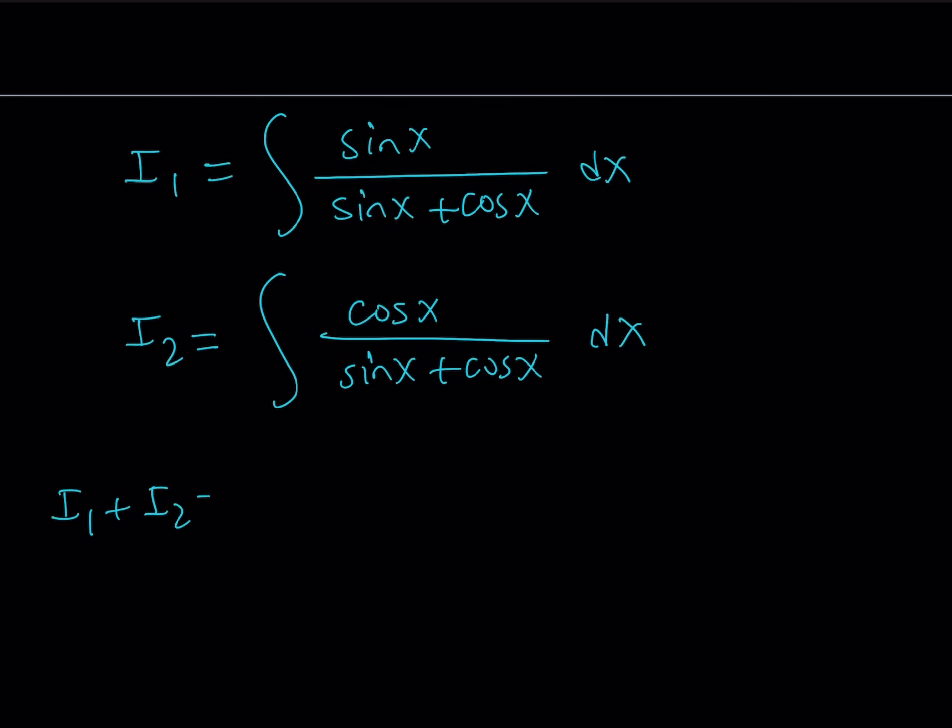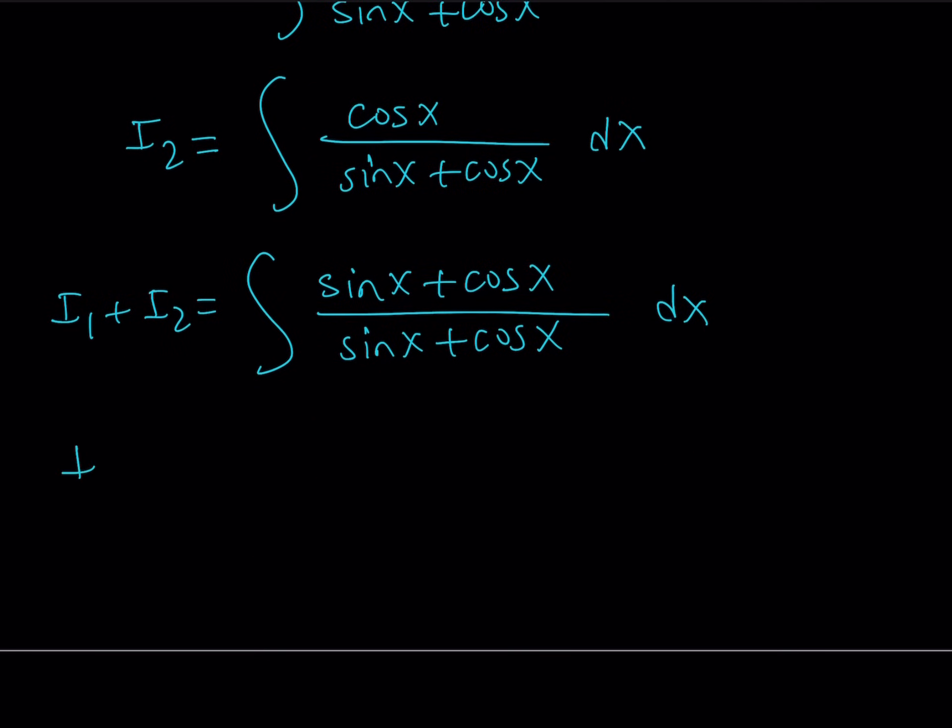So i1 plus i2 is going to be sine x plus cosine x over sine x plus cosine x, which is 1 dx. And 1 dx is probably one of the easiest functions to integrate. And what is the integral of 1? So we're looking for a function whose derivative is 1. So its anti-derivative is going to be x. But we're just going to add a constant so that we don't lose points on the test. So i1 plus i2 equals x plus c1.